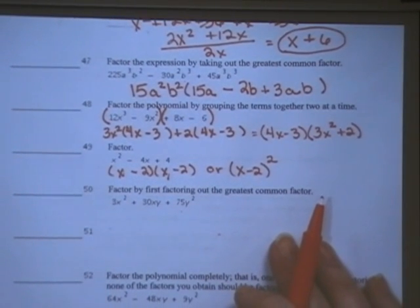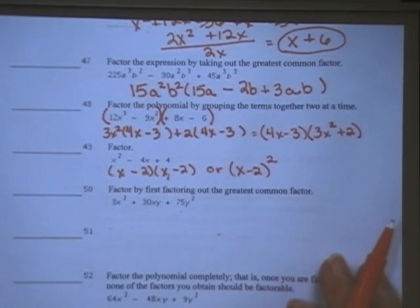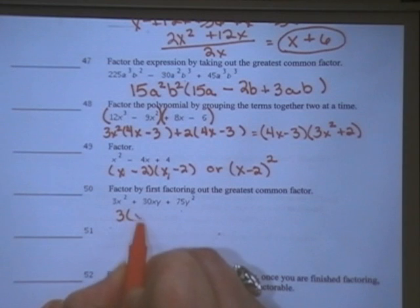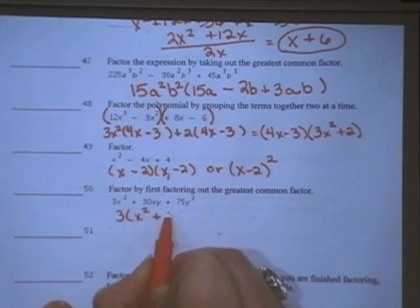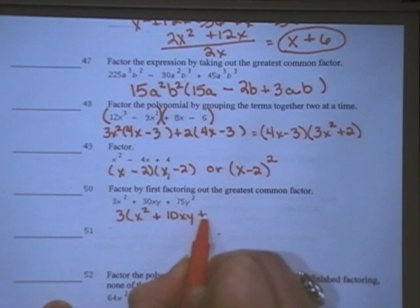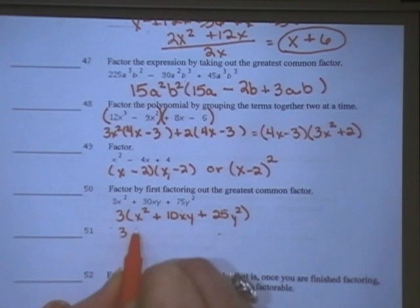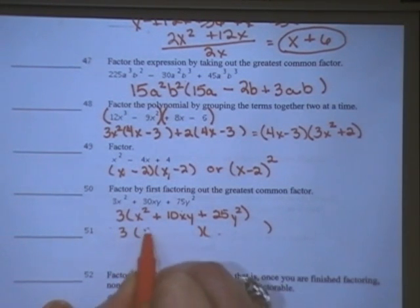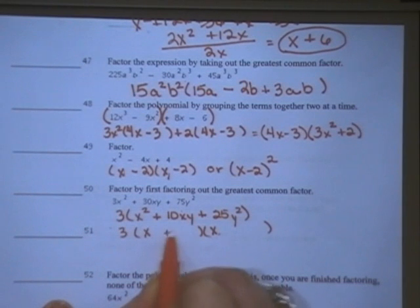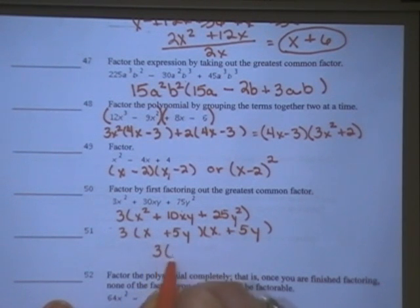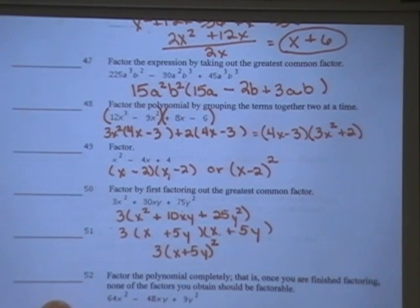Number 50 asks you to factor by first factoring out the greatest common factor. So the greatest common factor there is just a 3. I'm left with x squared plus 10xy plus 25y squared. That will factor again. x squared factors into x times x, and 25 factors into 5y and 5y. You may leave it like that, or you may write it as x plus 5y quantity squared. Don't forget to include your 3 as your GCF out front.